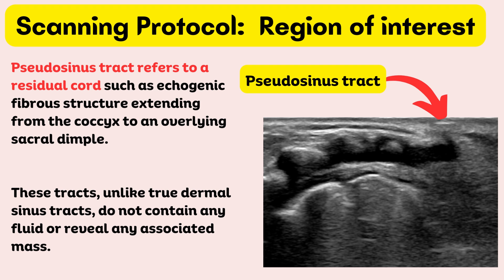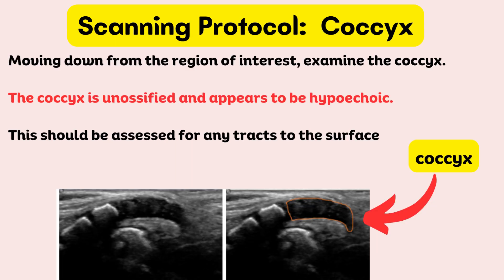Pseudosinus tract refers to a residual cord-like echogenic fibrous structure extending from the coccyx to an overlying sacral dimple. These tracts, unlike true dermal sinus tracts, do not contain any fluid or reveal any associated mass. Moving down from the region of interest, examine the coccyx. The coccyx is unossified and appears hypoechoic. This should be assessed for any tracts to the surface.